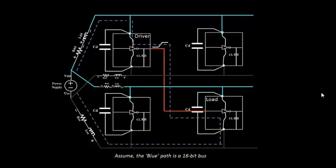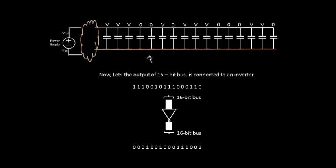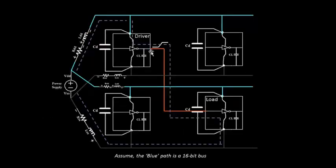Let's assume this is a 16-bit bus and look at its initial conditions. When we say each and every line is logic 1 or logic 0, this is what we mean: when one particular line of the 16-bit bus is at logic 1, there is a capacitor charged to VDD. Similarly, wherever we see 1s, those capacitors are charged to VDD; wherever we see 0s, those capacitors are discharged to ground.